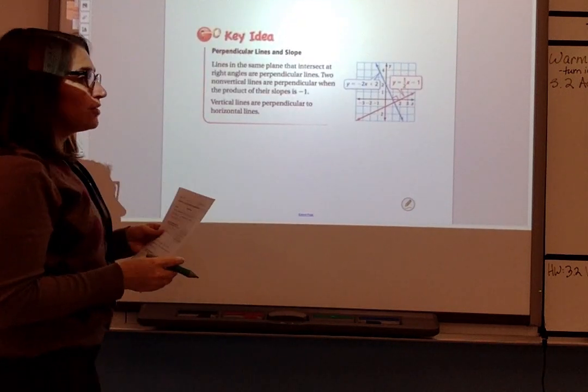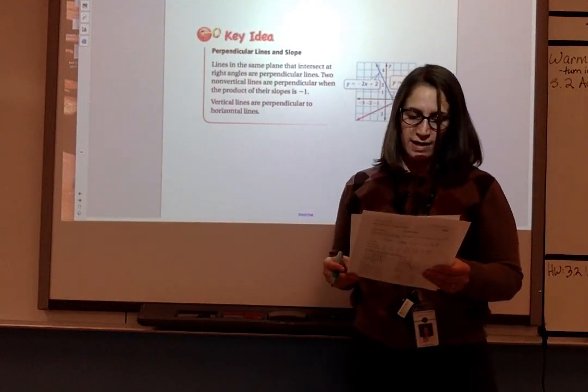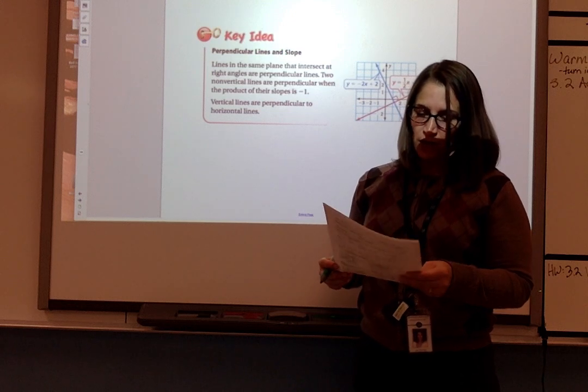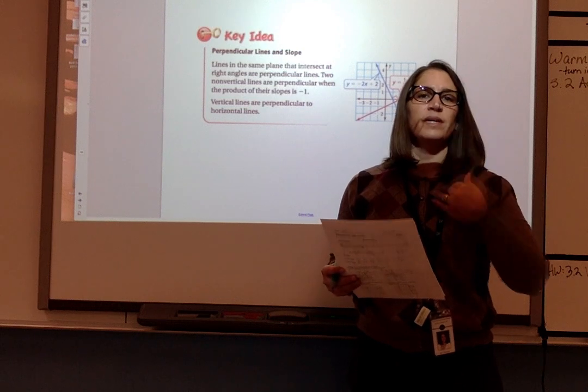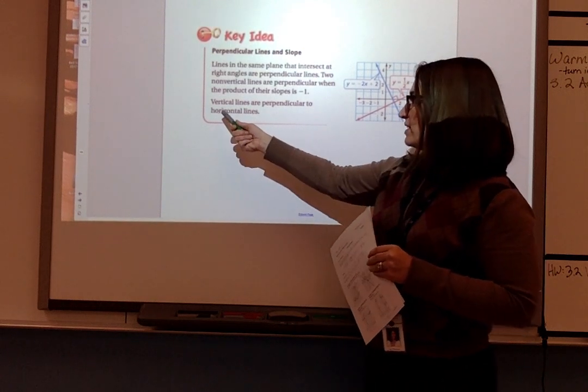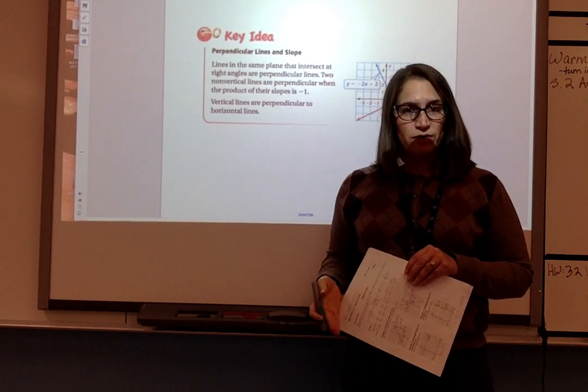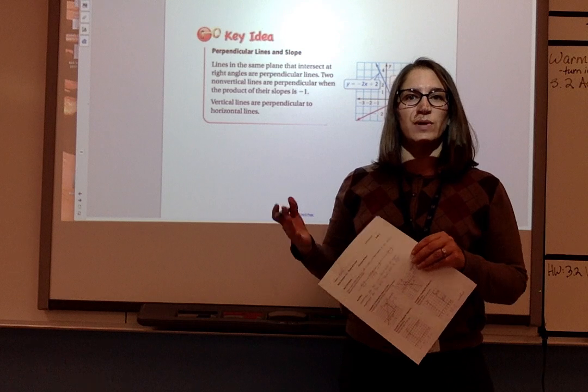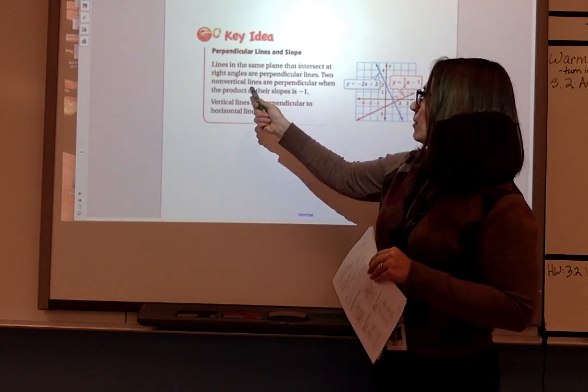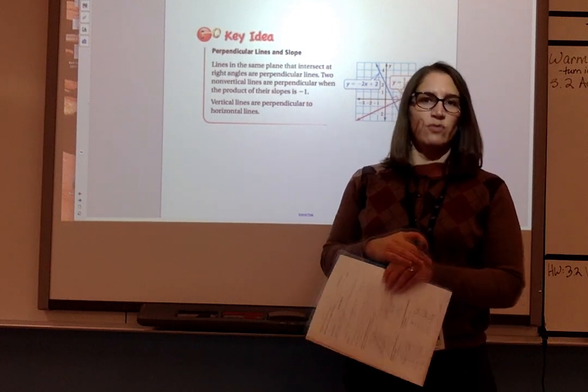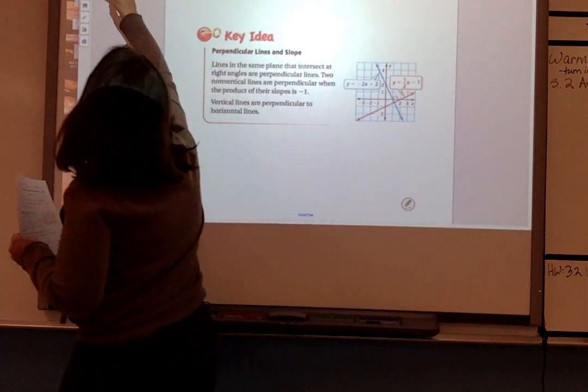Now let's look at perpendicular lines. Lines in the same plane that intersect at right angles are called perpendicular lines. Two non-vertical lines are perpendicular when the product of their slope is negative 1. We also should specify that vertical lines are perpendicular to horizontal lines. We know that vertical lines don't have a slope, so we need to make that special addition to our rule that if the product of the slopes is negative 1, or if one line is vertical and one is horizontal, we have perpendicular lines.